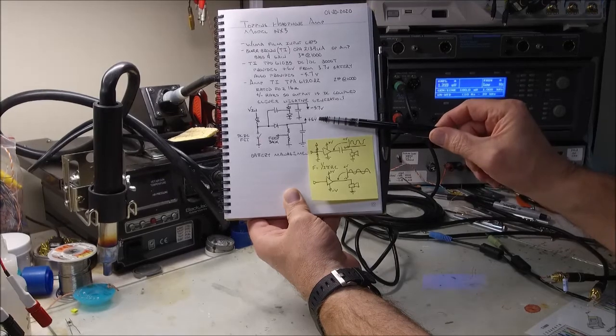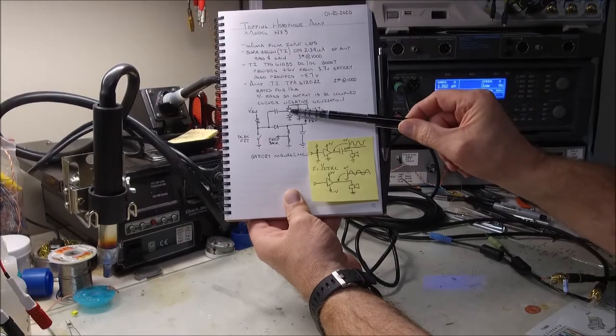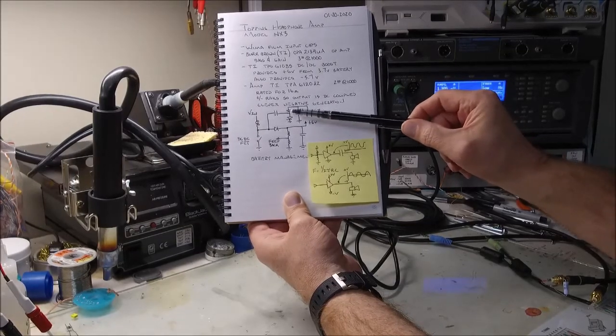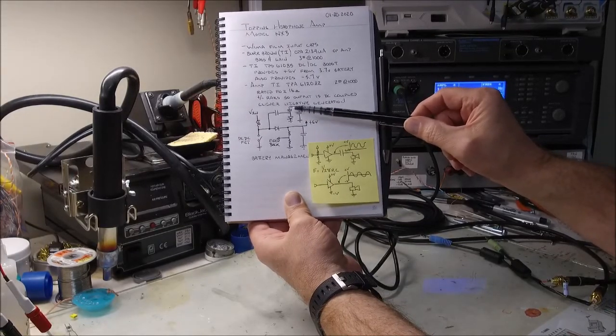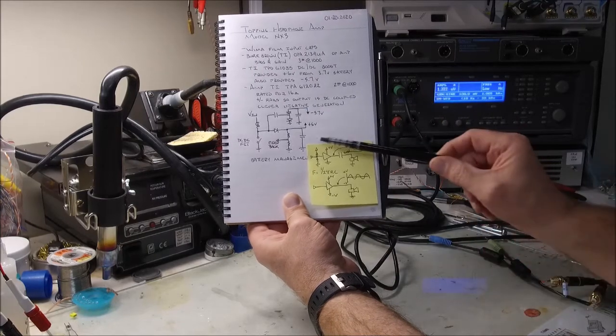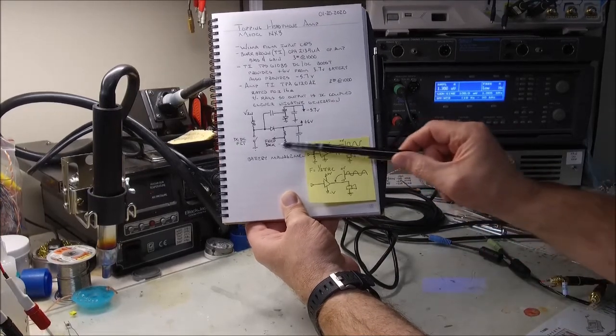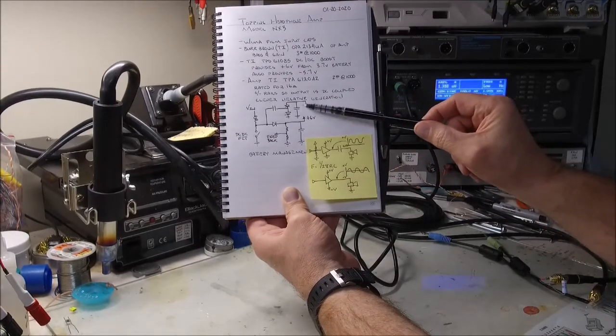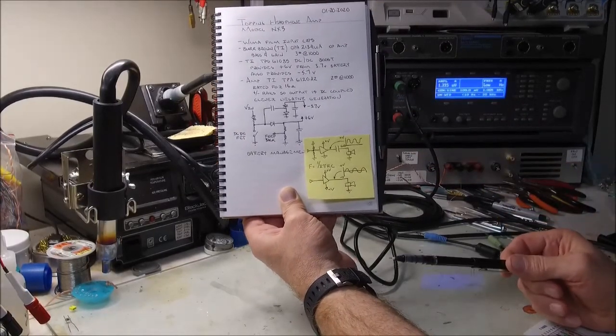And we get a negative 5.7 volts. The reason why it's not 6 volts is we're basically seeing, we lose the voltage drop of this diode here. So this side is regulated. This side technically is not really regulated, but should work just fine. Then this is what I was talking about earlier.